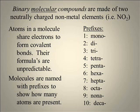The first kind of compound we'll consider is a binary molecular compound. This is made from two non-metal atoms which happen to be neutrally charged. Atoms in a molecule will share electrons to form covalent bonds. Their formulas are unpredictable. Nitrogen and oxygen, for example, can bond together many different ways. When you have a compound of NO2, we'll name that molecule with prefixes to show how many atoms are present.